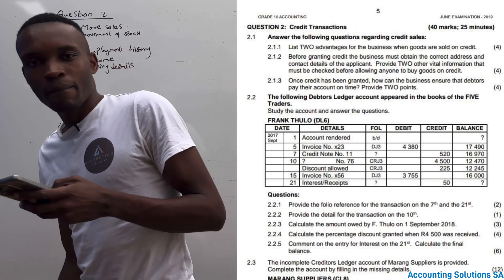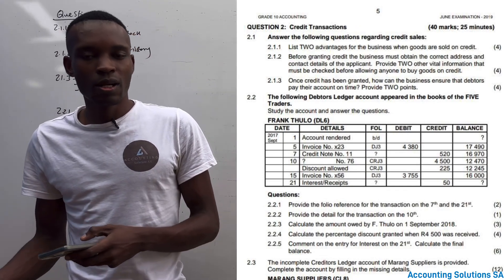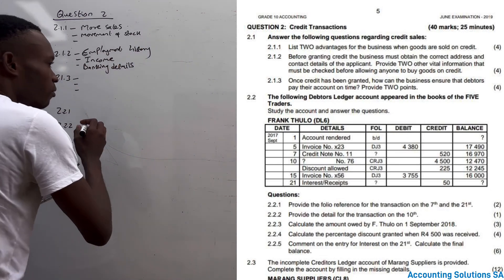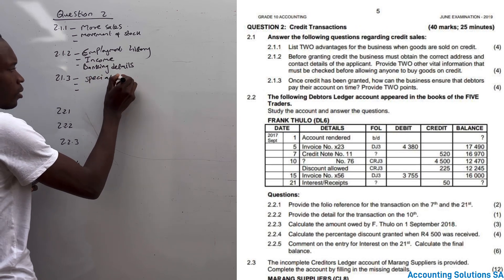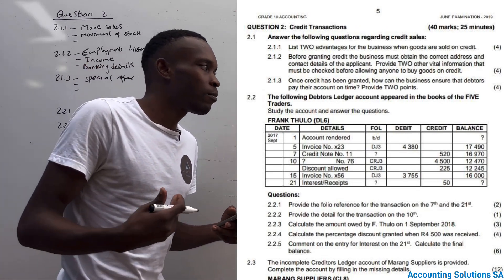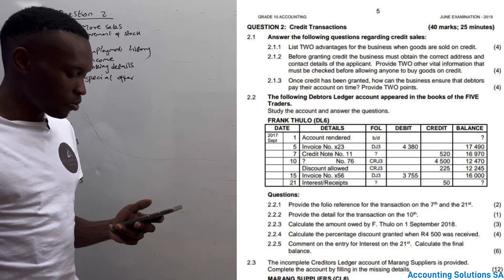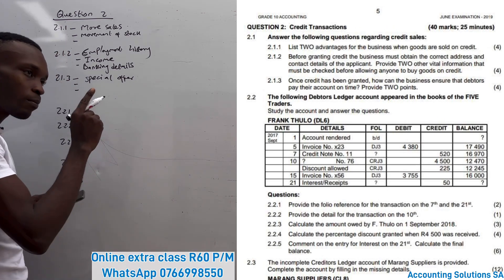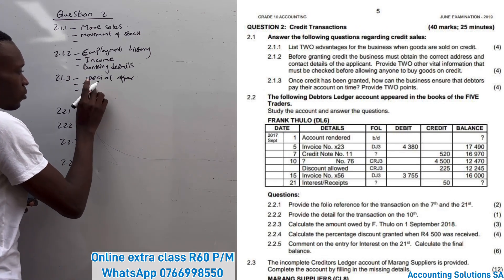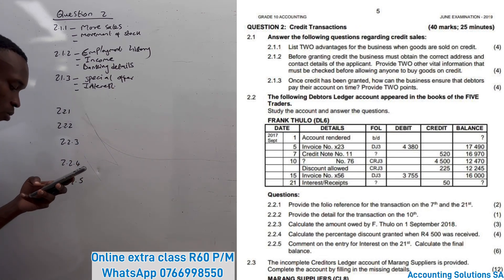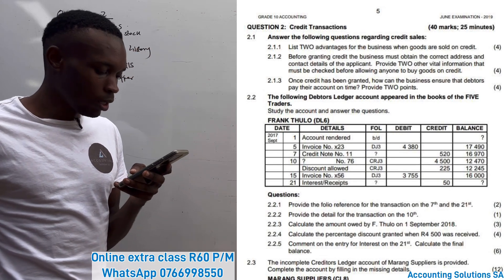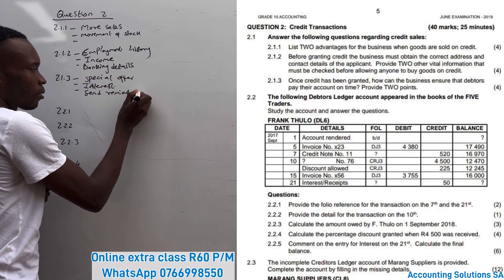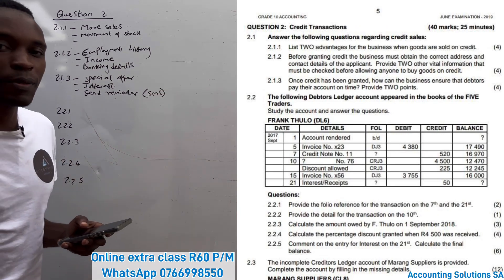Question 2.1.3: Once credit has been granted, how can the business ensure the debtor pays their account on time? Number one, we give them a special offer — if they come and pay on time, we can give them more goods. Number two, we charge interest: if the person is not paying on time, we tell them we are going to charge interest. Number three, we send reminders via SMS or email to remind them to pay the amount.